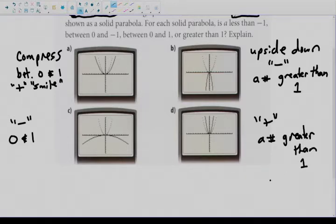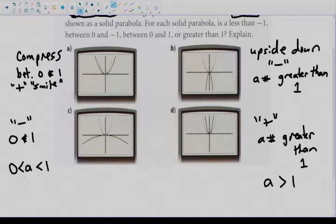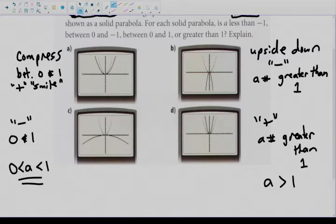I wonder how many of you would know the symbol for saying that a is greater than 1. Now, between 0 and 1 is a little bit more complicated — this is how we write between 0 and 1 in math: a is greater than 0, a is smaller than 1. A lot of students get confused with this type of terminology because they want to read it from left to right. But you read it from the a: a is greater than 0, a is smaller than 1. As long as you can say it in words, that's fine.